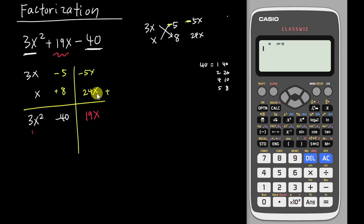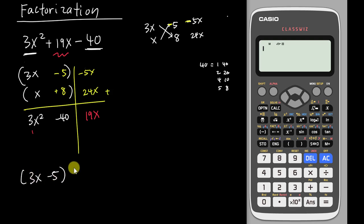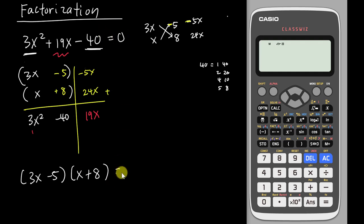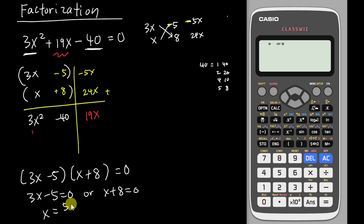Now we take the two brackets from the multiplication zone — this gives (3x − 5)(x + 8). This is the factorized answer. If the question asks you to solve equals zero, you go further: set 3x − 5 = 0 or x + 8 = 0, giving x = 5/3 or x = negative 8. That's method number one.